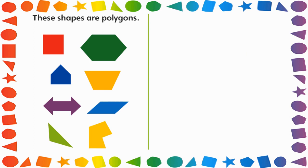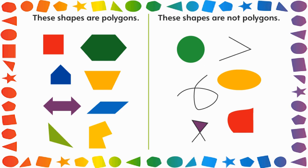Remember that these shapes are polygons. They can be regular or irregular. They are polygons because they have three or more line segments, and those line segments intersect or connect to one another. These shapes are not polygons.